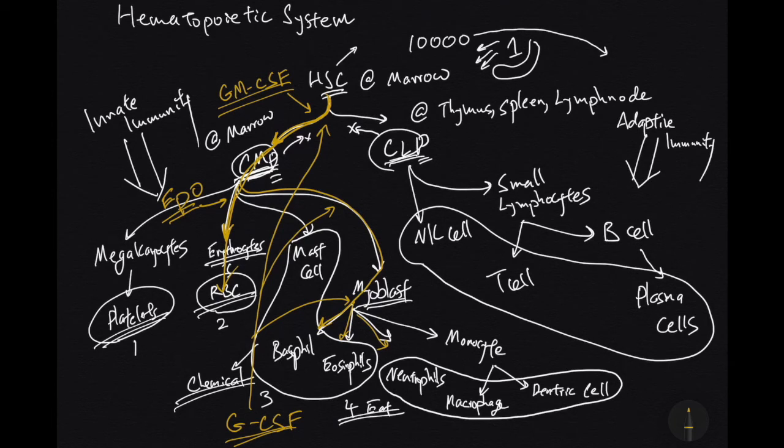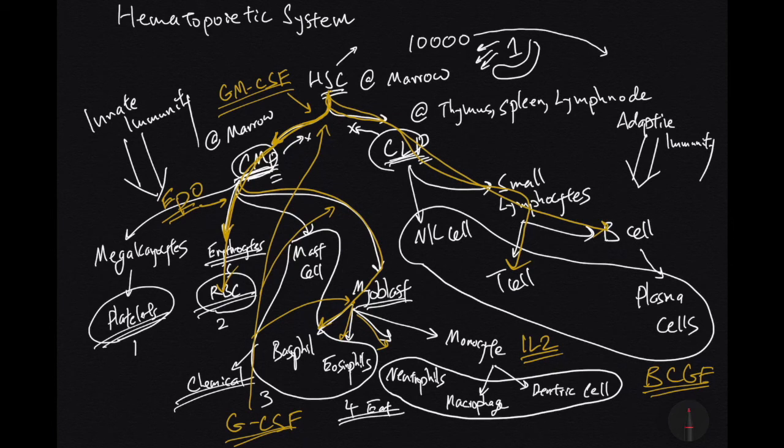And on the lymphoid side, you have IL-2. And having IL-2 will drive the stem cells to become CLP, small lymphocytes and T cell. And having lots of B colony growth factor is going to drive B cell differentiation.